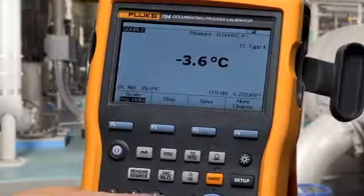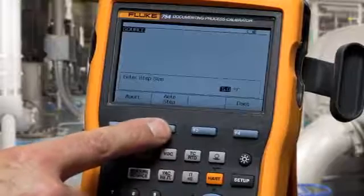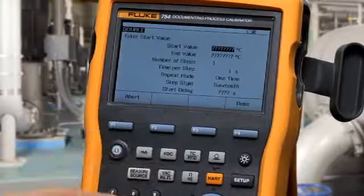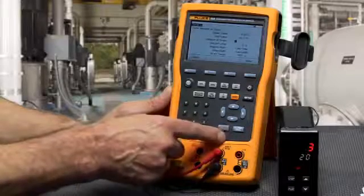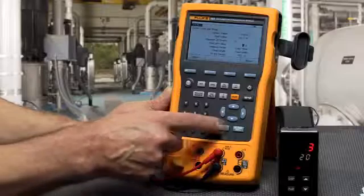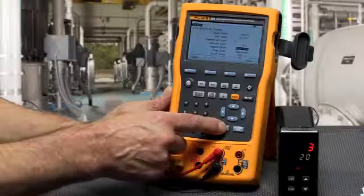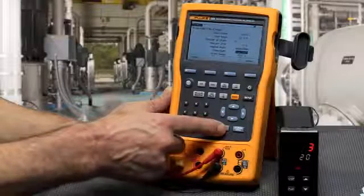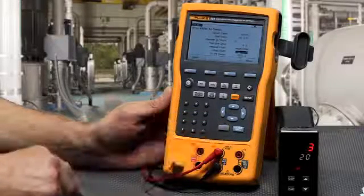To auto-step the output, select step, and then auto-step, type in the starting value, the ending value, the time per step in seconds, the number of steps, whether you want it to be repeating or one-time test, and select your step style.